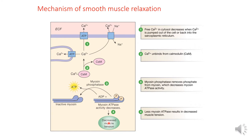Smooth muscle relaxation depends on pumping of calcium back to the sarcoplasmic reticulum or extracellular fluid. This activates myosin phosphatase, which dephosphorylates the myosin head, resulting in less binding of actin to myosin and a decrease in muscle tension — producing relaxation. The dissociation of calcium from calmodulin activates myosin phosphatase, ultimately producing muscle relaxation.